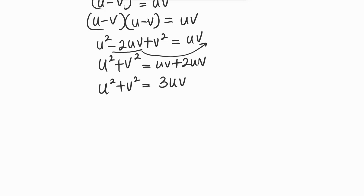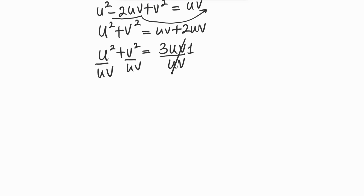Now let's divide both sides by uv. Dividing u² and v² individually by uv, the squared on u cancels with the u in the denominator, and similarly for v. So we arrive at u/v + v/u = 3.